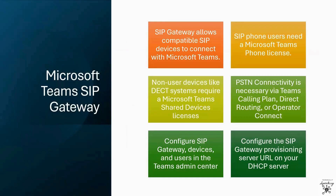SIP Gateway requires the SIP phone user to have a Microsoft Teams phone license, or for a non-user device such as a DECT system, the SIP device must have a Microsoft Teams shared devices license. In addition, the user account or device will require PSTN connectivity using a Microsoft Teams calling plan, direct routing, or operator connect. You add SIP devices to Teams by configuring a SIP Gateway provisioning server URL on your DHCP server. During onboarding, SIP Gateway will push the default configuration and authentication user interface to the device. Once the device is registered, if it has a screen, it will show an authentication URL and a pairing code, which you should use to sign into the device.